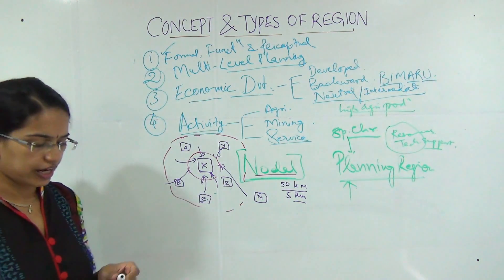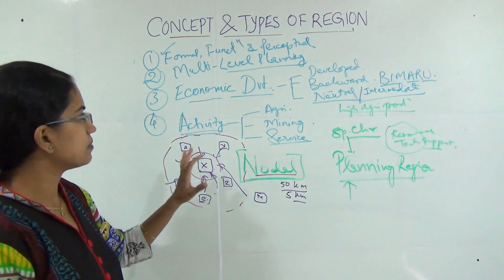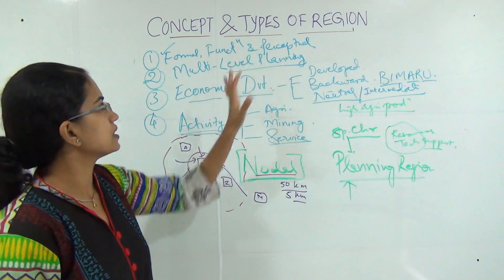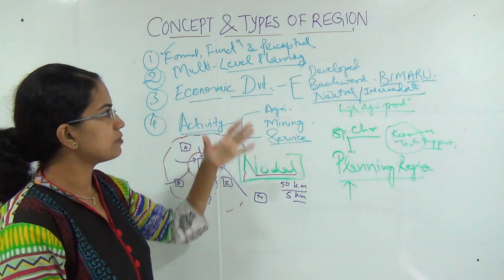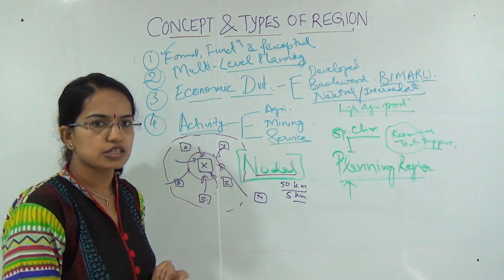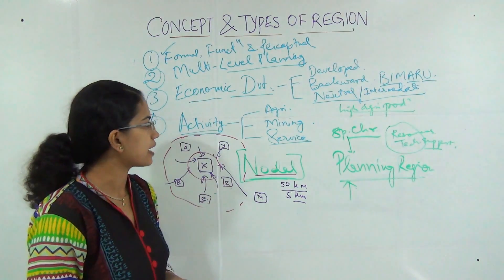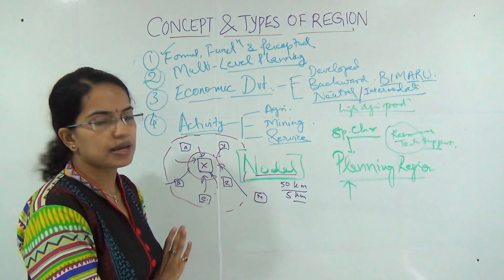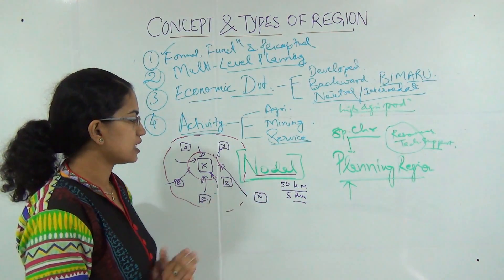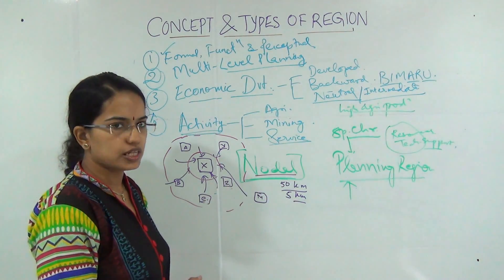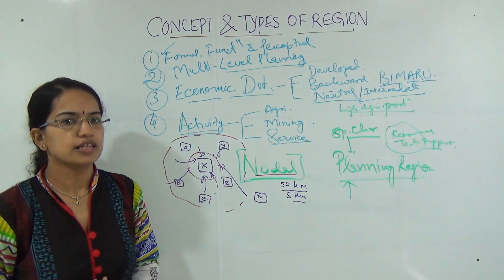In this class we are trying to understand the various types of region. The foremost basic classification is formal, functional, and perceptual. Then we have multi-level planning regions, regions based on economic growth and development, regions based on activity, planning regions demarcated by the planning commission, and nodal regions. We will be talking more about the growth center and the growth pole in further classes.